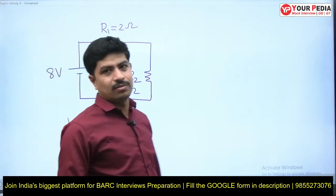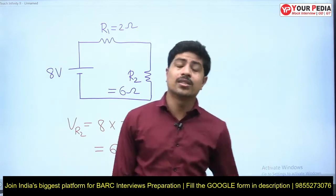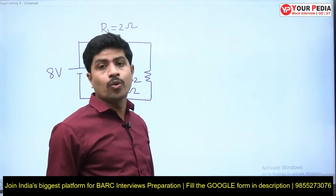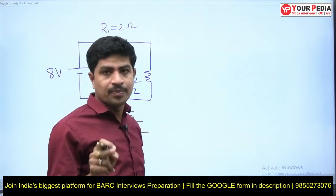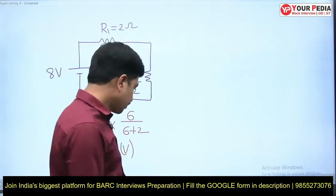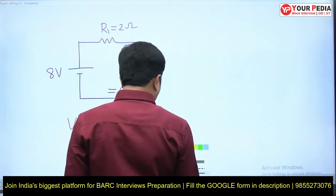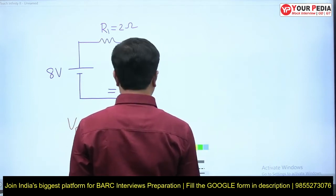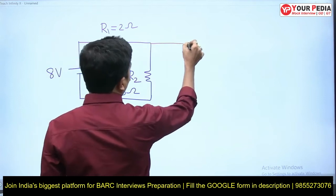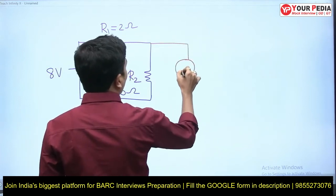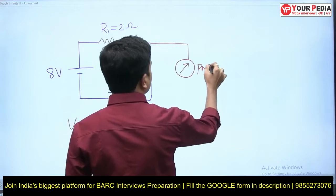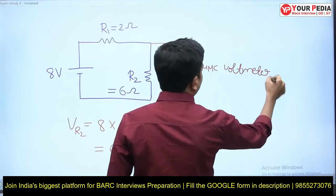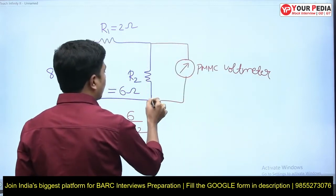That's a simple answer anyone can give. But now if I ask you to actually measure the voltage across R2, what are you going to do? We are going to put a voltmeter — a PMMC old meter — to measure the voltage across R2.